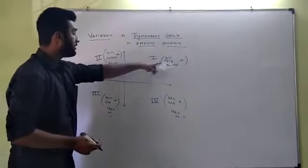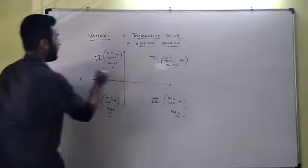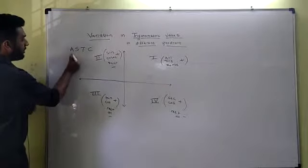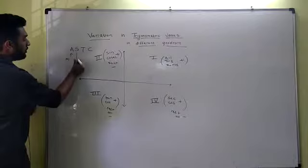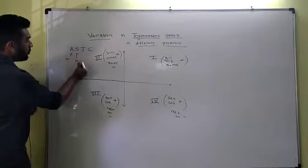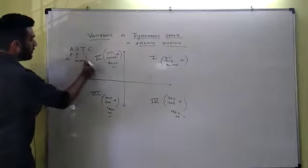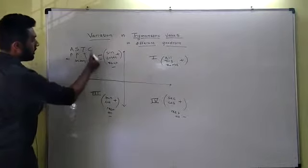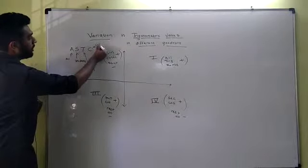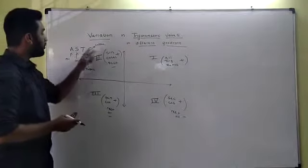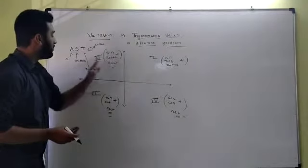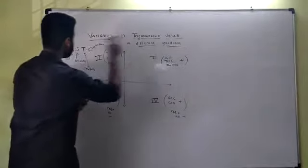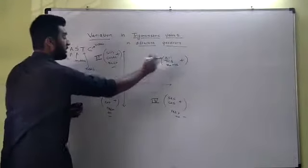You all can remember this by a shortcut called A, S, T, C. It's All Students Take Coffee. All students take coffee, this is how you can remember in which quadrant which trigonometric ratios are positive. Here, A for all trigonometric ratios.